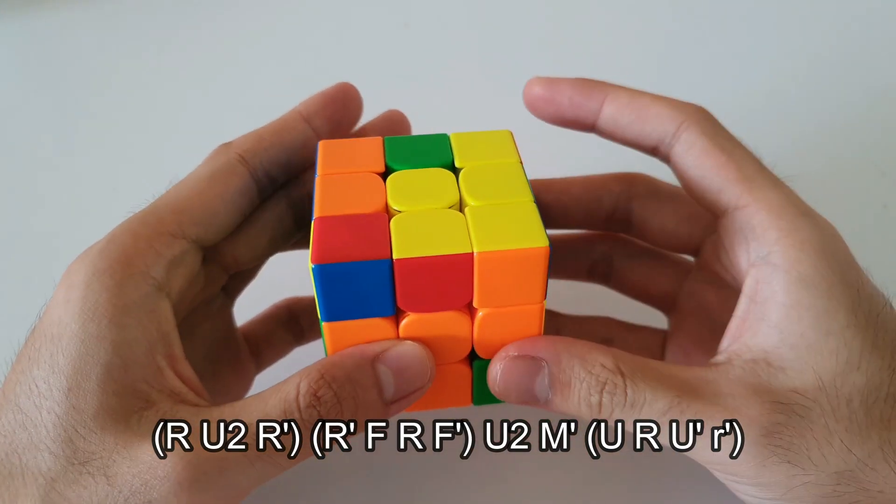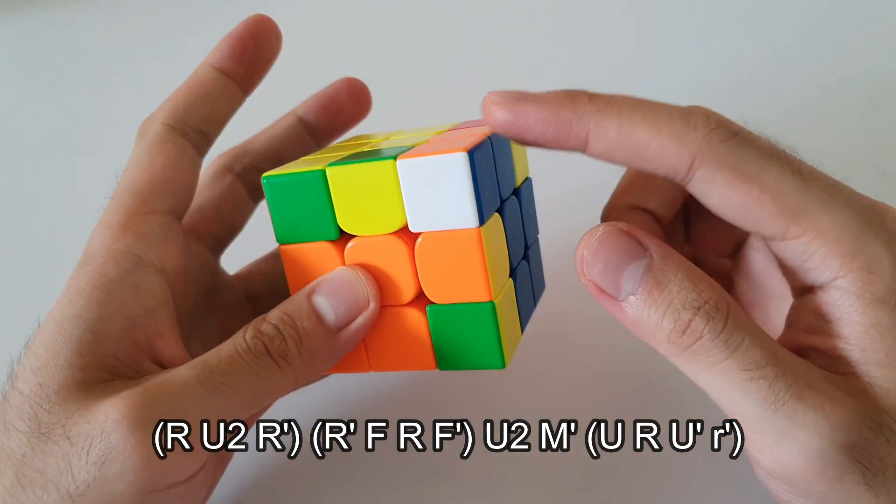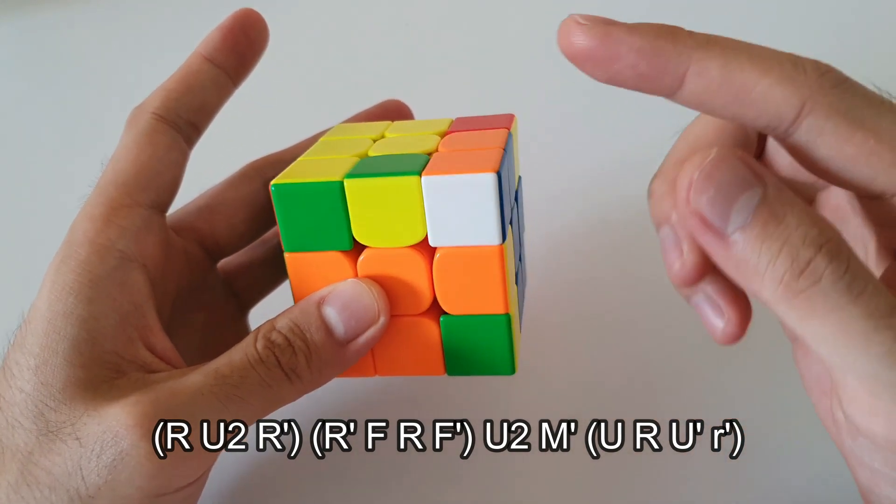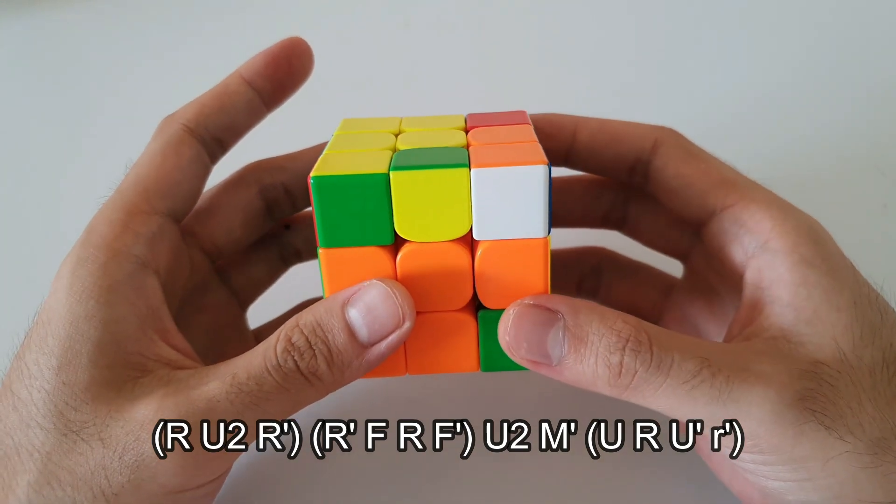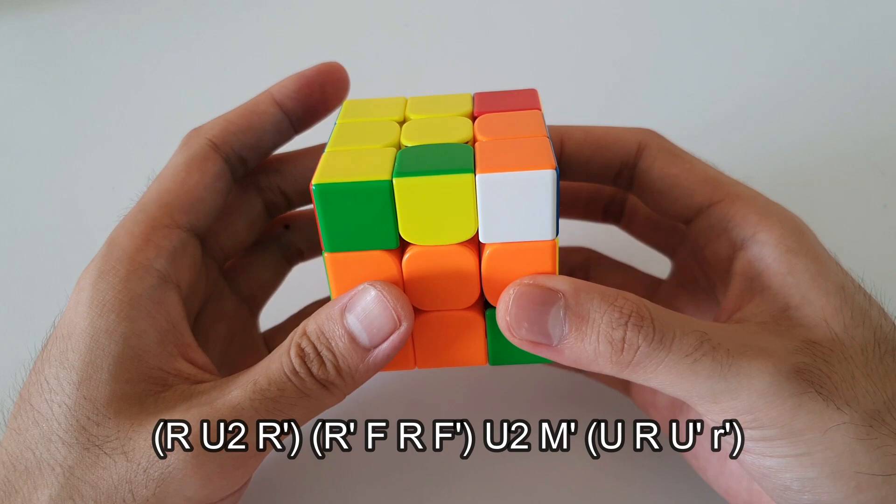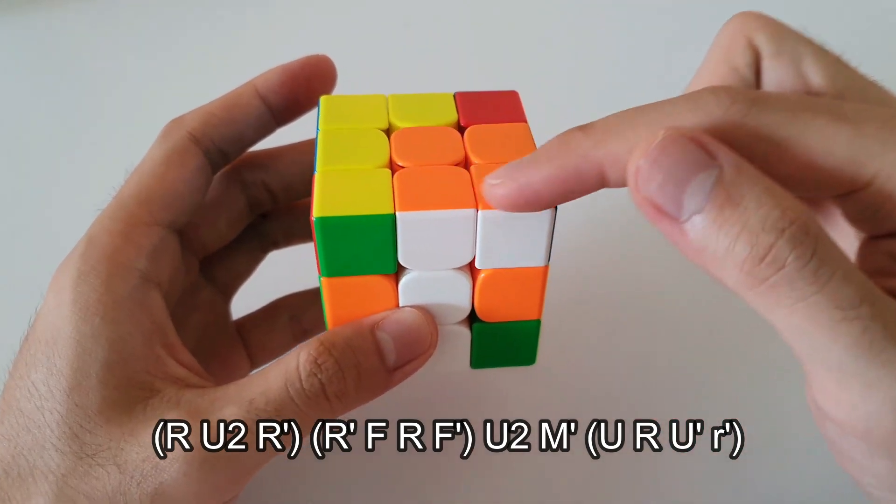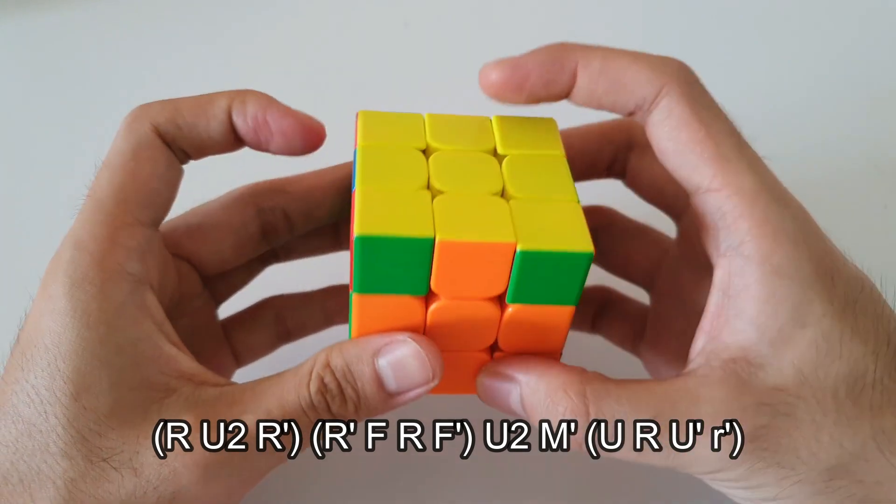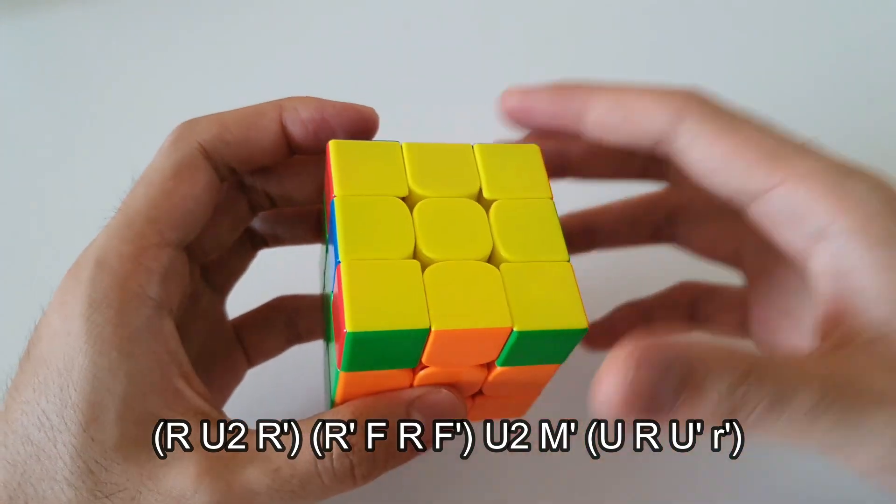Following that, it's U2 to bring the F2L pair to the front. Now from here, instead of just inserting it regularly, we actually want to do something pretty unique. So we want to start off with an M' then insert this entire block into position. And that would actually solve that OLL case as well.